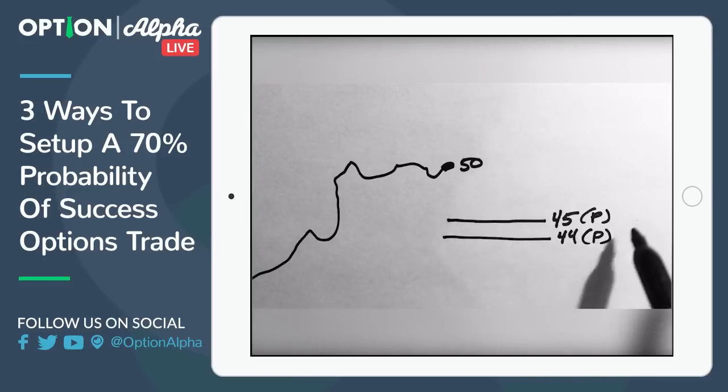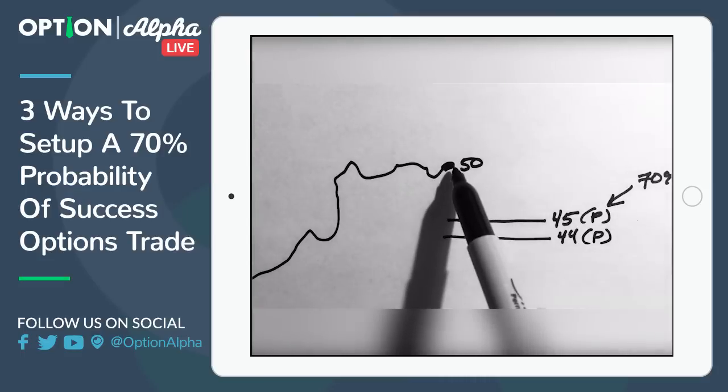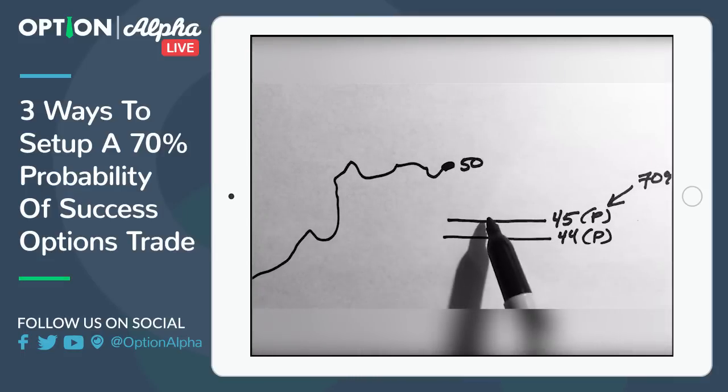Now in this case, you could figure out exactly where this put option's probability of success is and basically build a 70% probability of success trade that wins because the stock could go sideways, could move higher or could even go lower. But as long as it doesn't go below your short strike at 45, you would win. So that's a bullish type of a setup.